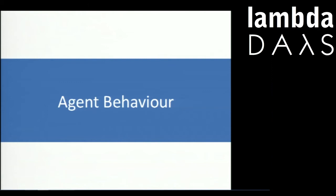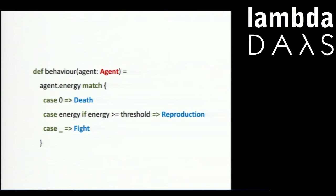I'm going to show you how to design such a multi-agent system in a functional way, using two types of functions. The first function is agent behavior. When triggered by an external action or event, agents choose an action to be performed based on their current state, knowledge, behavior, etc. For those familiar with the multi-agent topic, this is a very simple belief-desire-intent model. Here's what it looks like in our algorithm in Scala: based on the energy, the agent chooses some strategy to execute. If the energy is zero, it dies; if it's above some threshold, it reproduces; otherwise it fights.